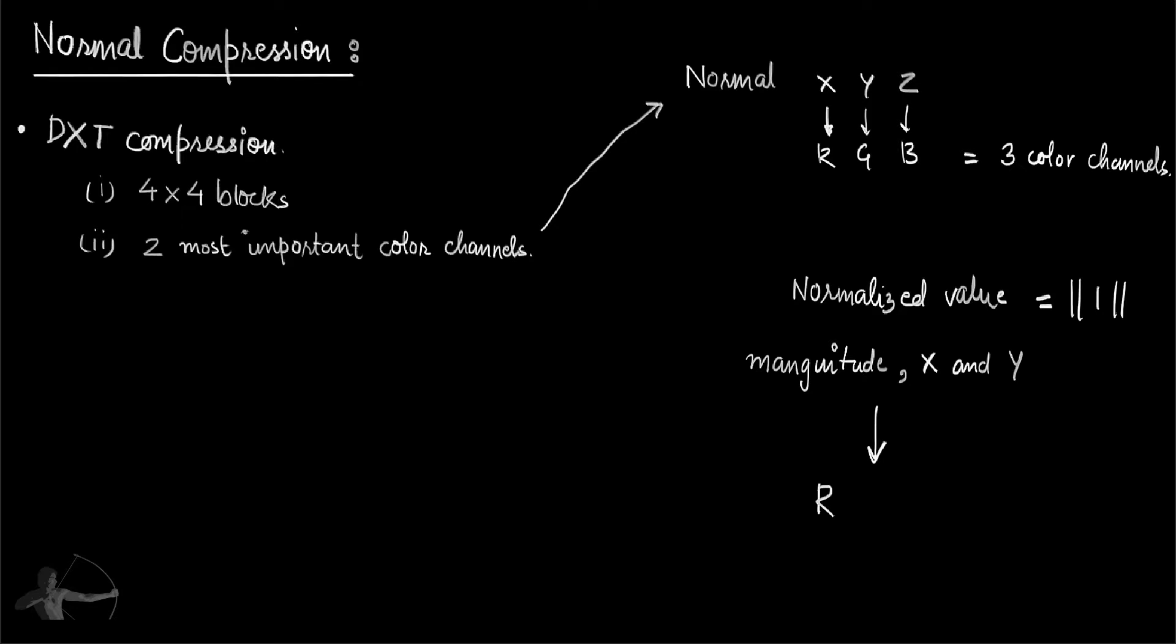So we will read R and G channel and we will ignore the Z value, because we know that in the tangent space, on average, the Z is always facing forward.